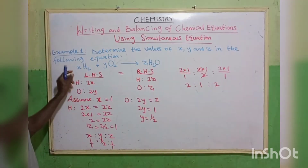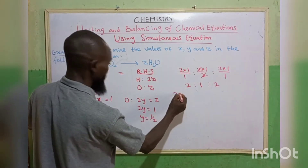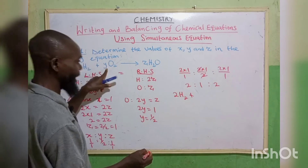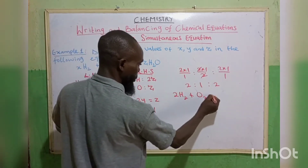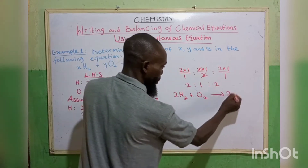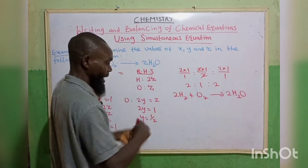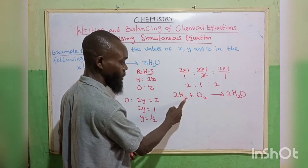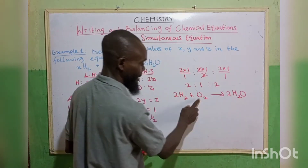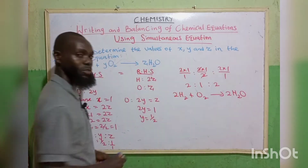So when we rewrite this equation we have 2H₂ plus 1O₂ to give 2H₂O. How many hydrogen do we have on the left? 2 times 2 gives 4. How many hydrogen on the right? 2 times 2 gives 4. The equation is balanced.